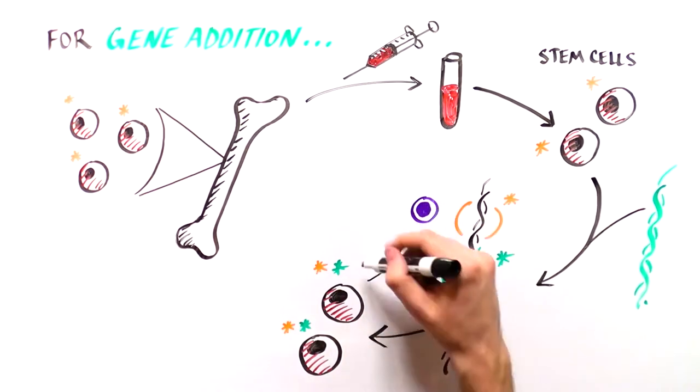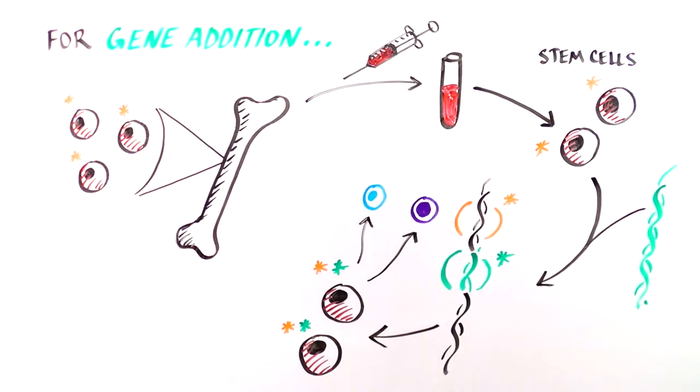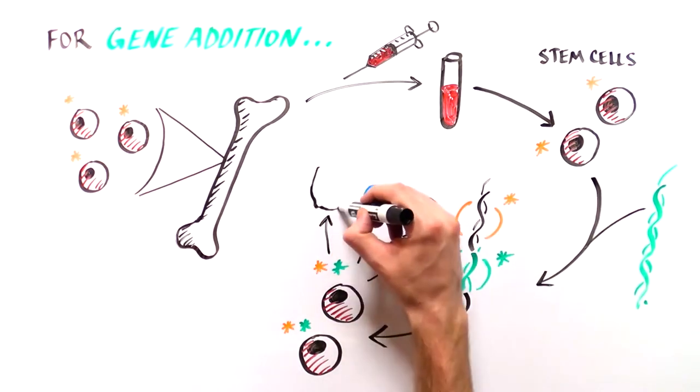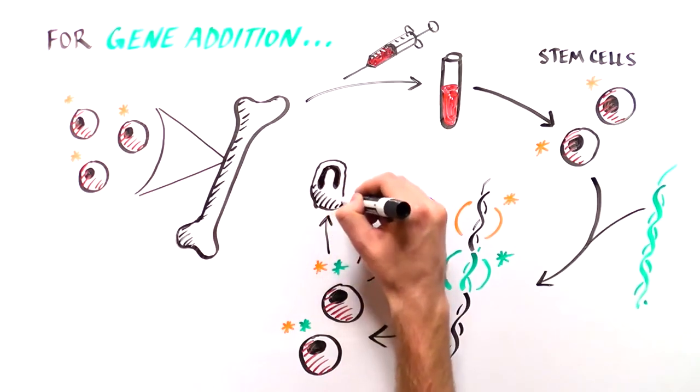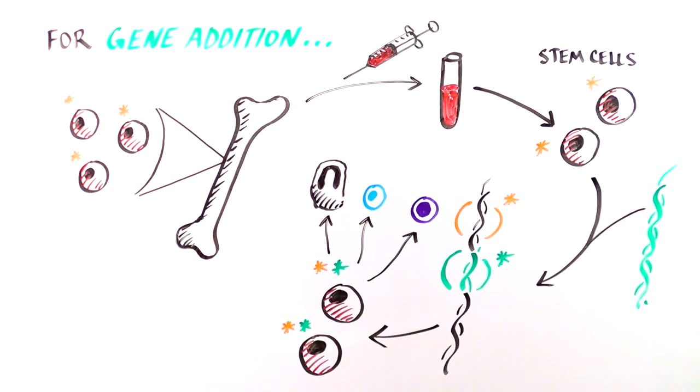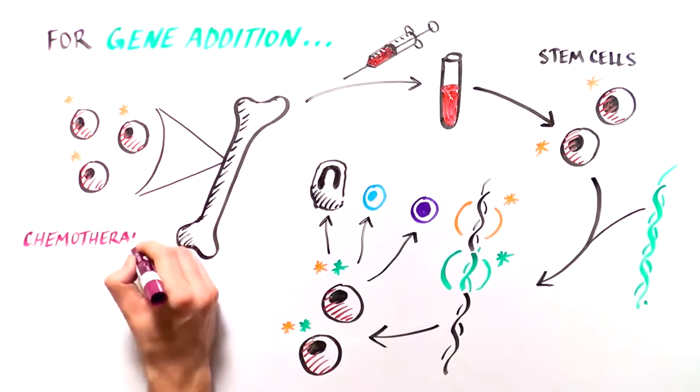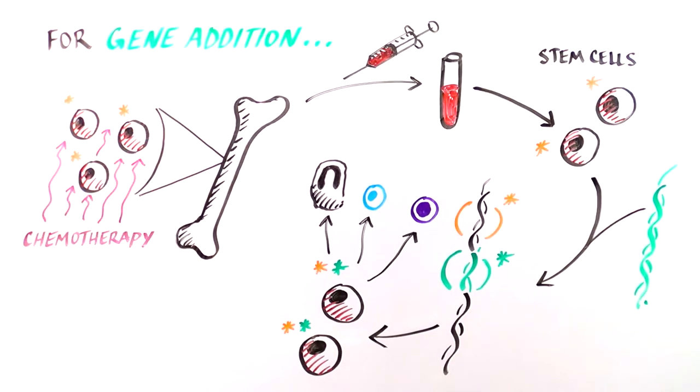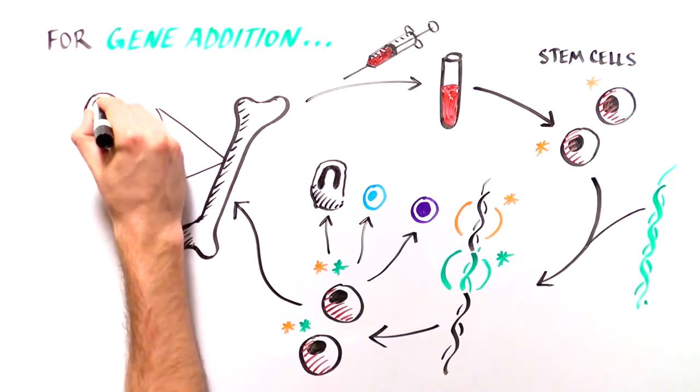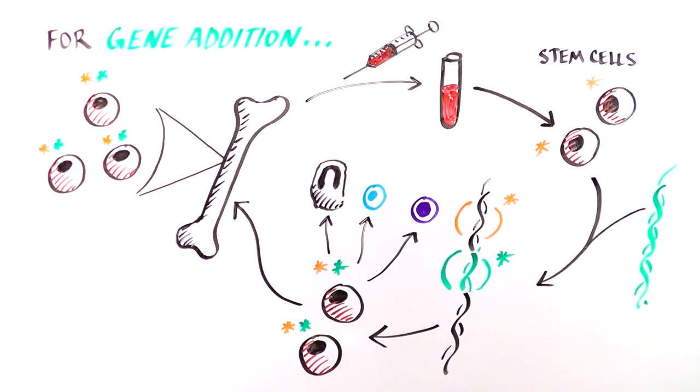With the normal version of the gene, the stem cells and the specialized immune cells they produce will all have a normal copy of the gene and will make normal proteins. Patients are given a low dose of chemotherapy to make space for the new cells, and then the repaired HSCs are transplanted.